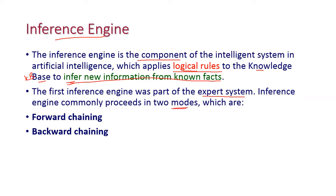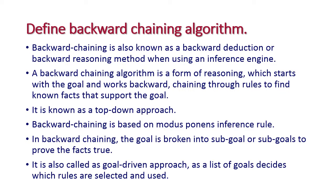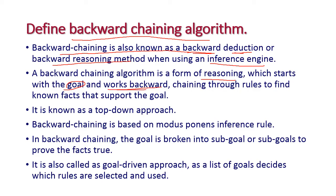There are two modes: the first is forward chaining and the second is backward chaining. The backward chaining algorithm is also known as backward deduction or backward reasoning. It is used in the inference engine and is a form of reasoning which starts with a goal and works backward, chaining through rules to find known facts that support the goal. It is otherwise called the top-down approach.